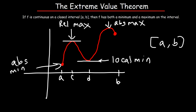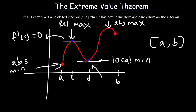There's something called Fermat's Theorem: if f has a local maximum or a local minimum at some point c, and if f prime of c exists, then f prime of c is zero. So at point c we have a relative maximum, and according to Fermat's Theorem f prime of c equals zero because we do have a point that exists in the function. Anytime you have a horizontal tangent line the derivative will be zero at that point, so f prime of d is also zero.